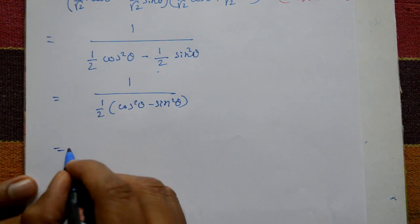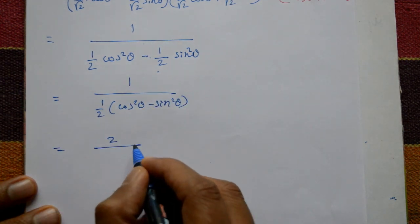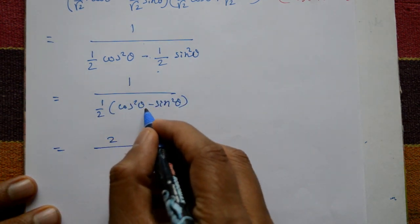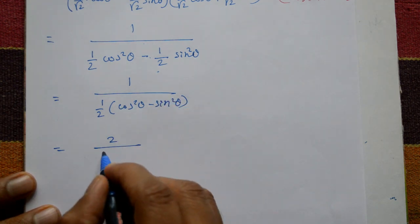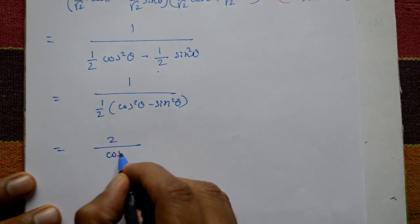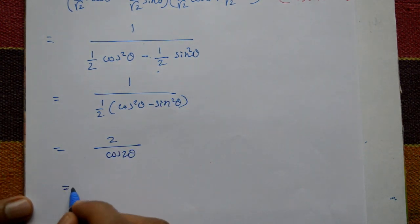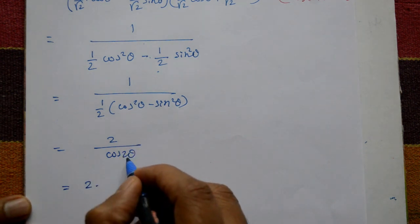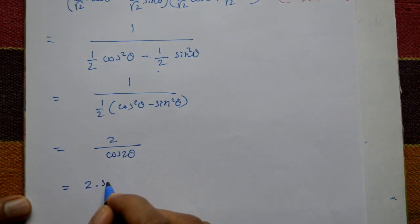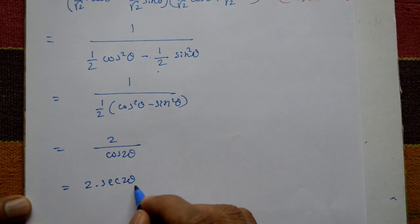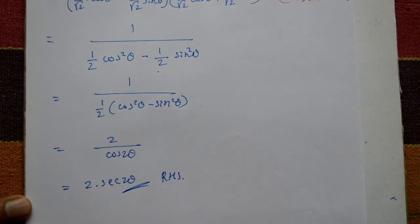Using the standard formula cos²θ − sin²θ = cos(2θ), this equals 2 · (1/cos 2θ) = 2·sec(2θ), which is the required right-hand side.